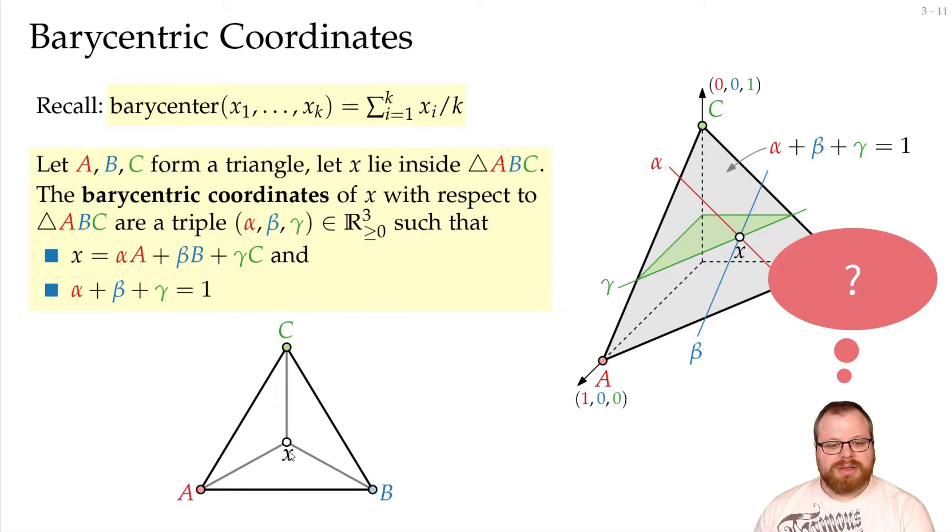So, back to this example, what would be the barycentric coordinate of our x here? It lies exactly in the barycenter of these three, so following this formula, we have 1 over 3 for all three of those.